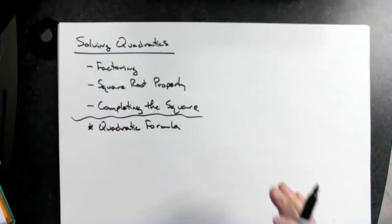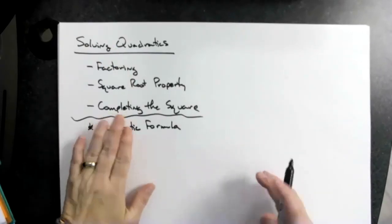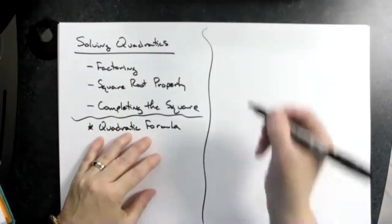All right, so that just kind of summarizes four ways to solve a quadratic. All right, now let's focus on this completing the square.